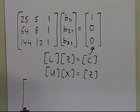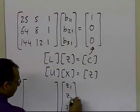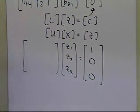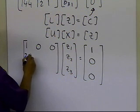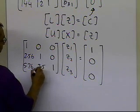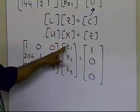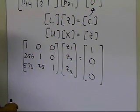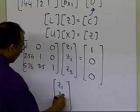I write down L times Z — where Z is [Z1, Z2, Z3] — equals C = [1, 0, 0]. The L matrix is [1, 0, 0; 2.56, 1, 0; 5.76, 3.5, 1]. This is simply forward substitution to find Z1, Z2, and Z3. I won't show all the steps since they're covered in a separate segment.